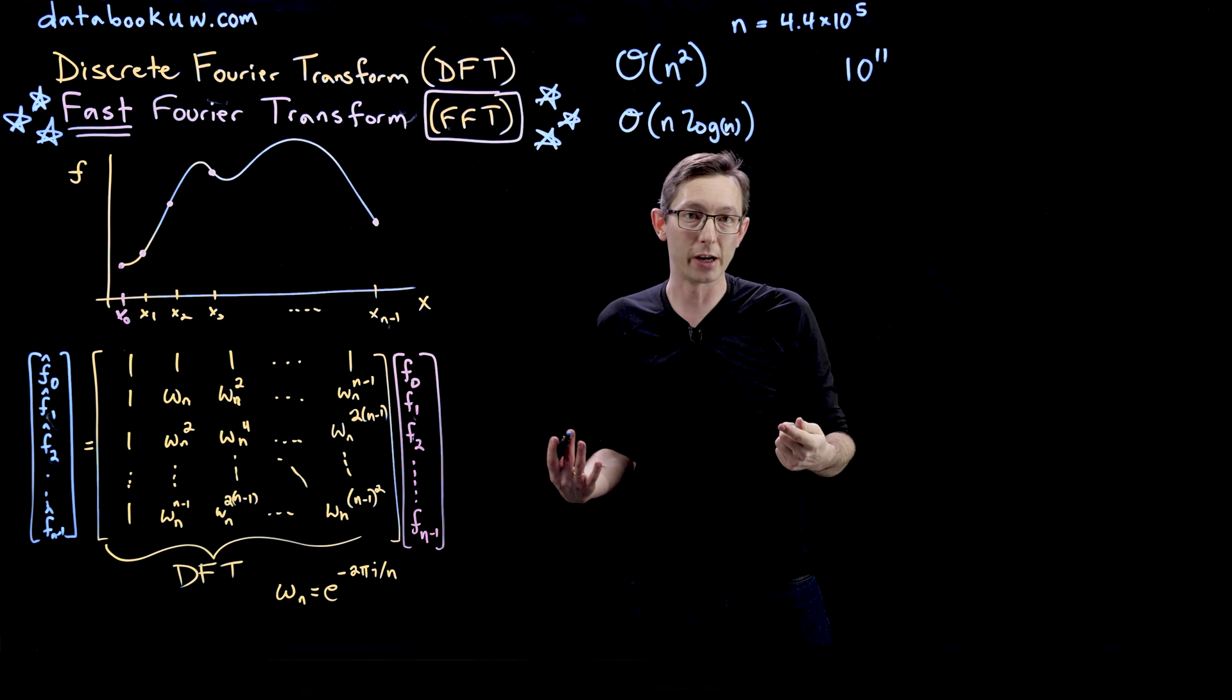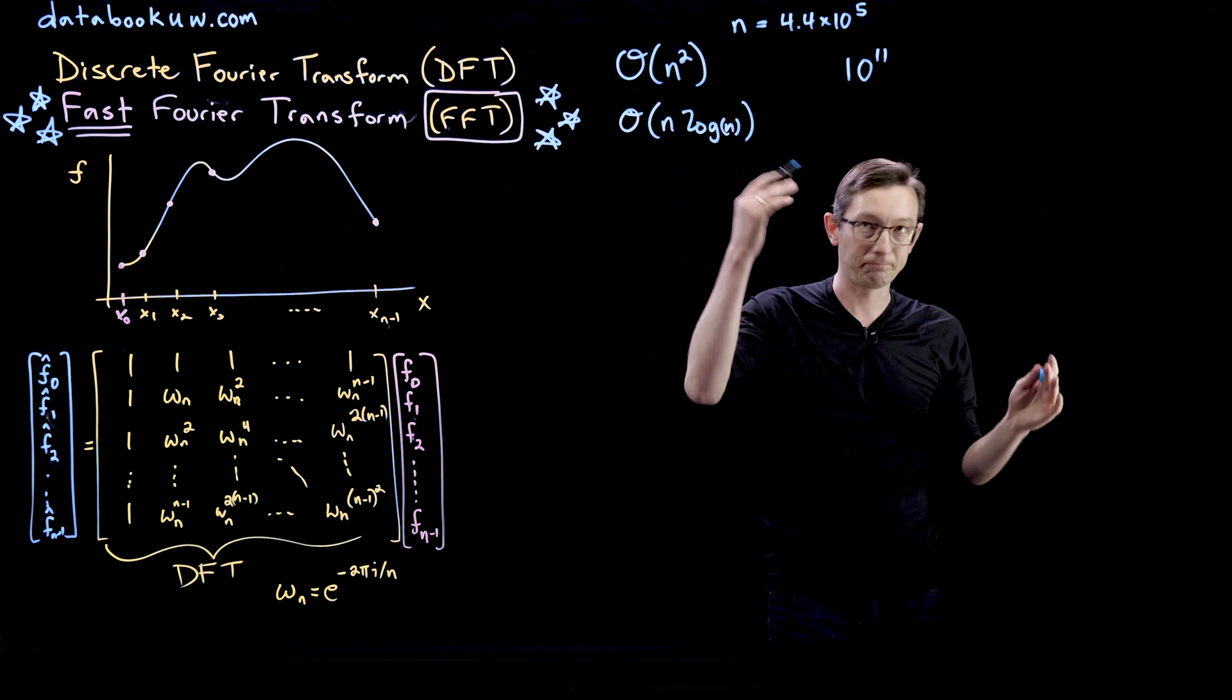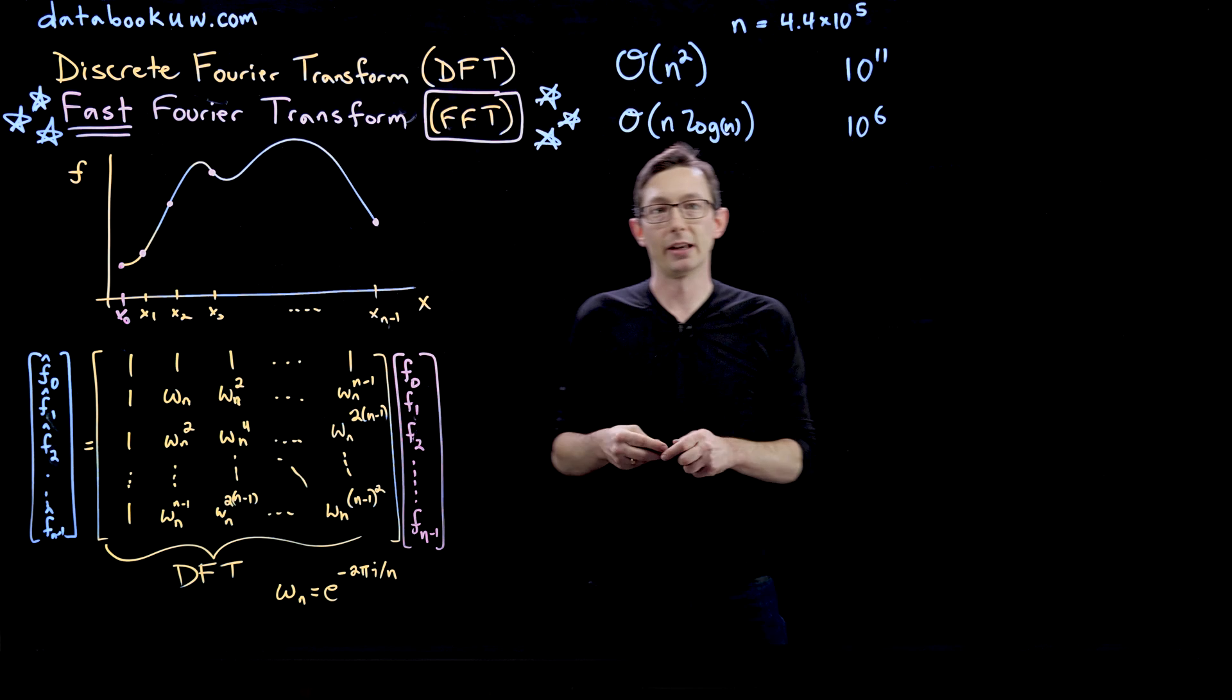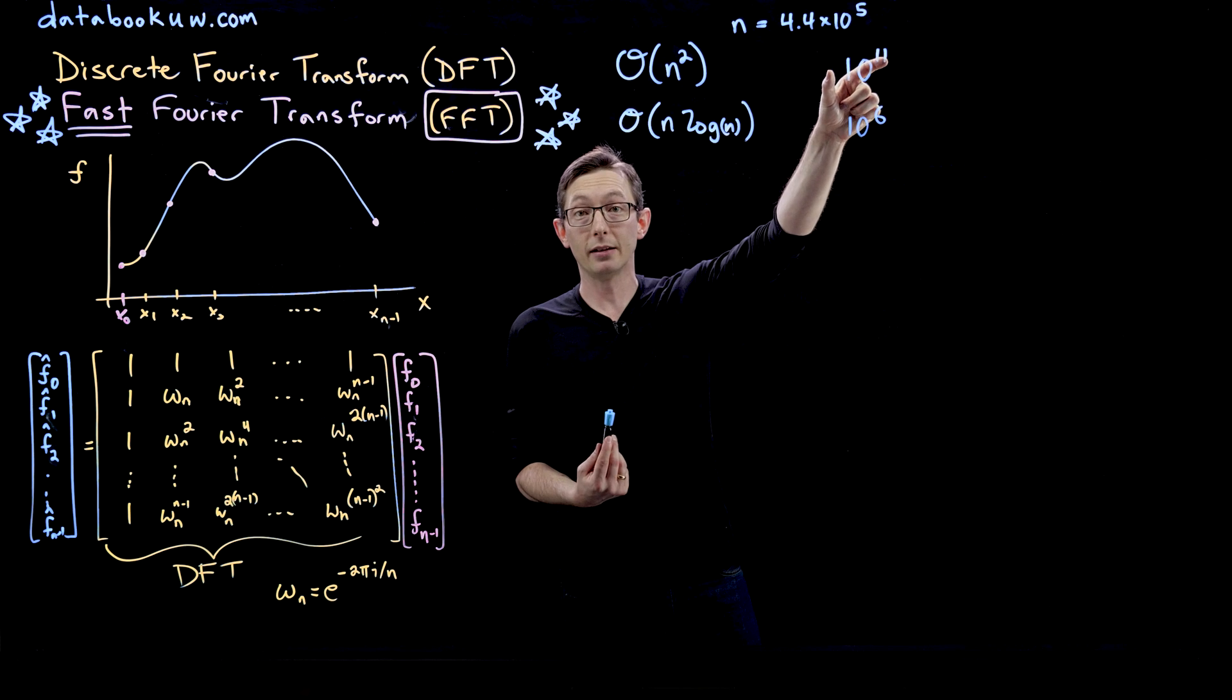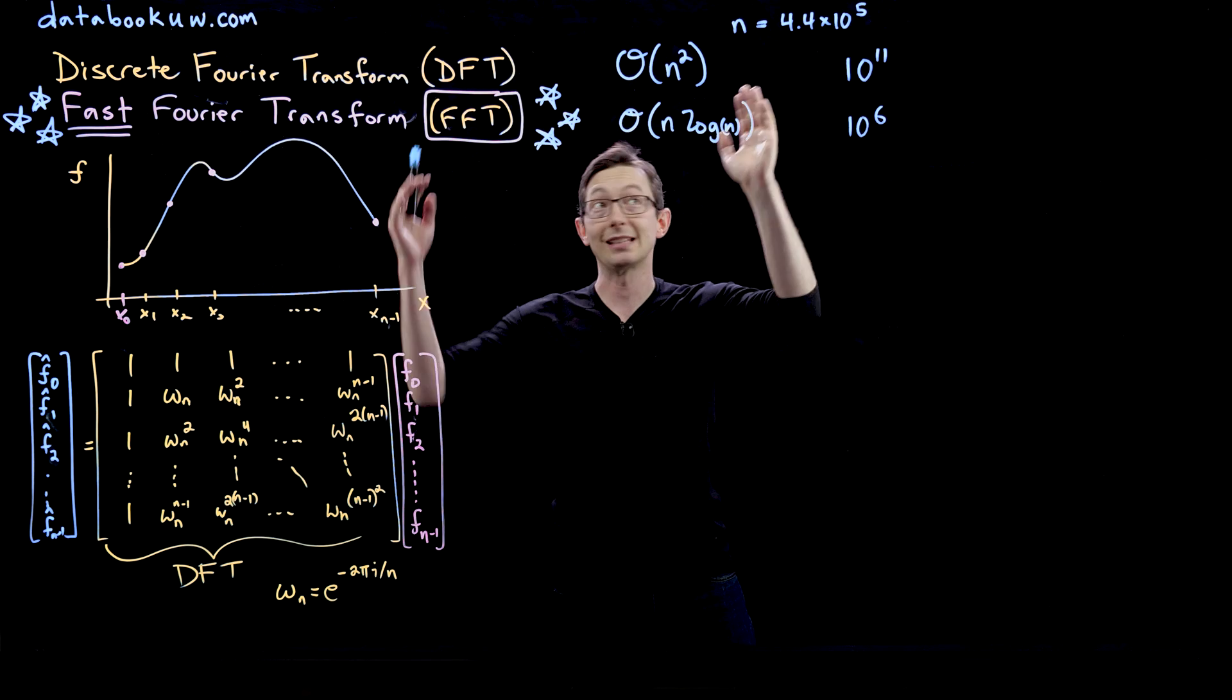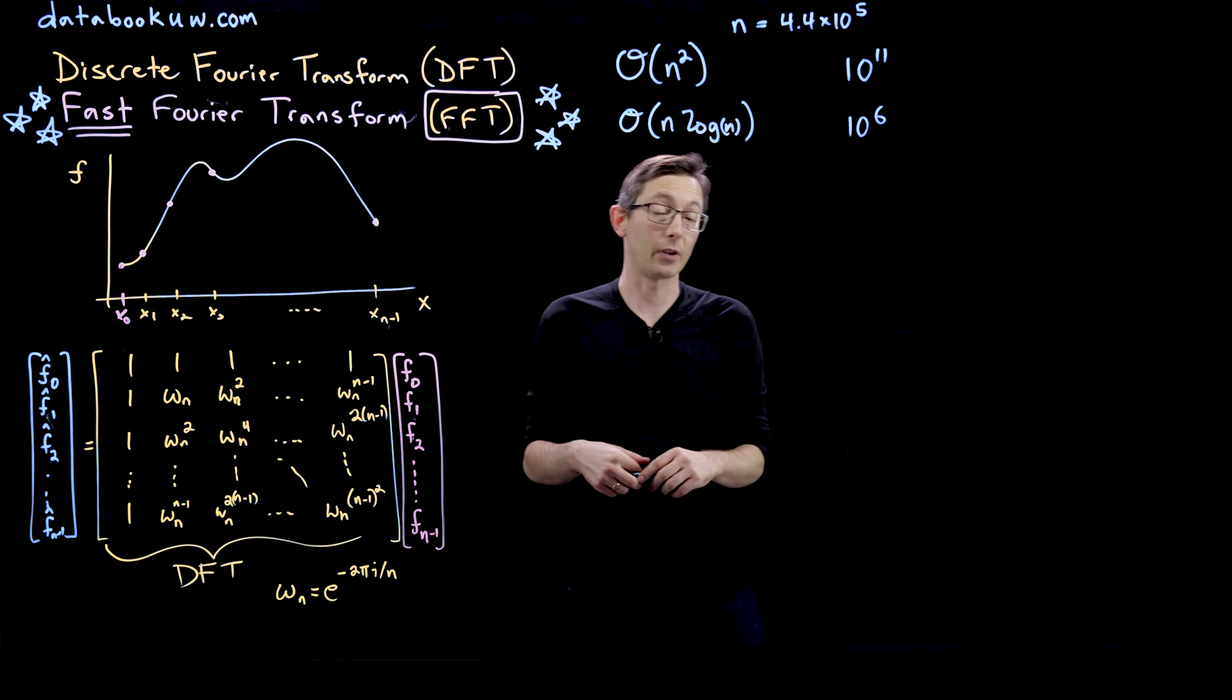Whereas the fast Fourier transform would be much, much smaller. It would be something like closer to 10 to the sixth matrix multiplications. This would be 100 billion multiplications. This would be about a million multiplications for the exact same 10 second audio clip just to compute the Fourier transform.